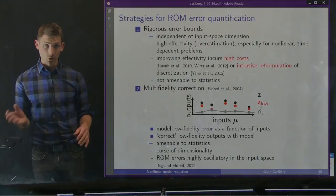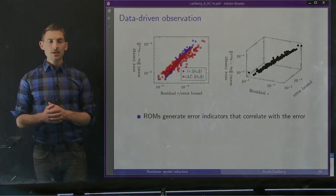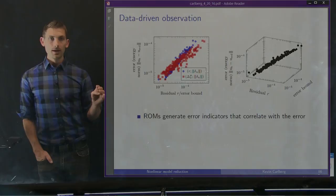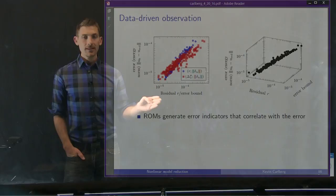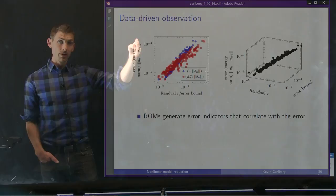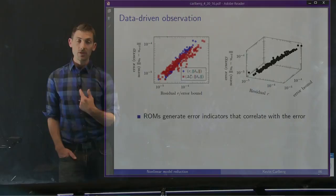This is generally why this method doesn't tend to work well with reduced order models, although it has worked well for other types of surrogates like coarse mesh surrogate models. What we observe is that the ROM produces error indicators — the residual and the error bound shown on the x-axis — that tend to correlate with the actual ROM error on the y-axis. Keep in mind when we run the ROM, I can compute quantities on the x-axis cheaply, but generally cannot compute the real error unless I run the full model.